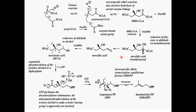HMG-CoA is reduced by reductase enzyme into mevalonic acid hemiacetal, which rearranges into mevalonic acid. Mevalonic acid is further reduced to give the alcohol. This compound, mevalonic acid, has no metabolic fate except the formation of terpenoids. It is phosphorylated by two ATP molecules to form mevalonic acid pyrophosphate, subsequently decarboxylated with the intermediacy of a third ATP molecule to form isopentenyl pyrophosphate (IPP), one of the building blocks.